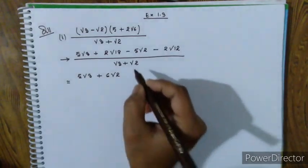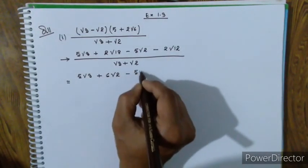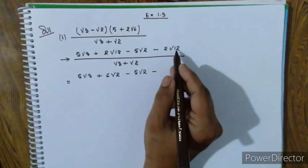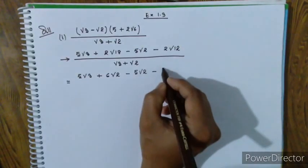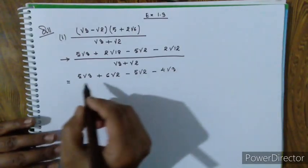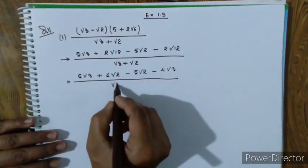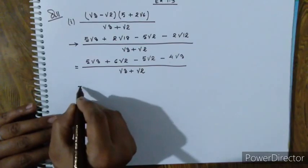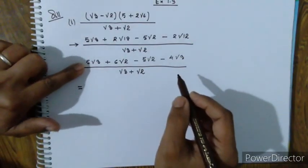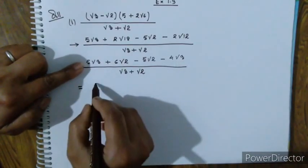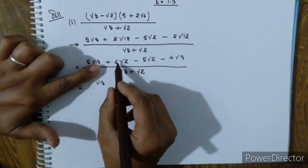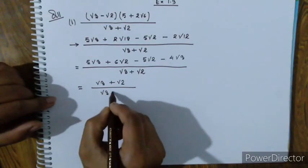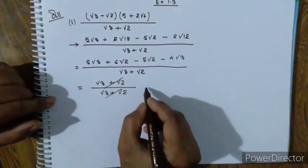6 root 2. Then 5 root 2 minus 2 root 12. Root 12 equals 4 root 3, so 2 root 12 equals 4 root 3. Simplifying: 5 root 3, 5 root 2, 3 root 2.